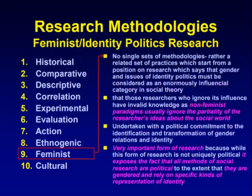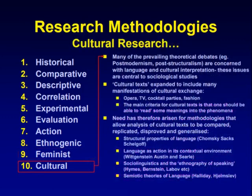In feminist or identity politics research methodology, there is no single set of methodologies, but rather a related set of practices which start from the position that gender and the issues of identity politics must be considered as an enormously influential category in social theory, and that researchers who ignore its influence have invalid knowledge. As non-feminist paradigms usually ignore the partiality of researchers' ideas about the social world, this research is undertaken with a political commitment to the identification and transformation of gender relations and identity. It is a very important form of research because it exposes the fact that all methods of social research are political, gendered, and rely on specific kinds of representation of identity.